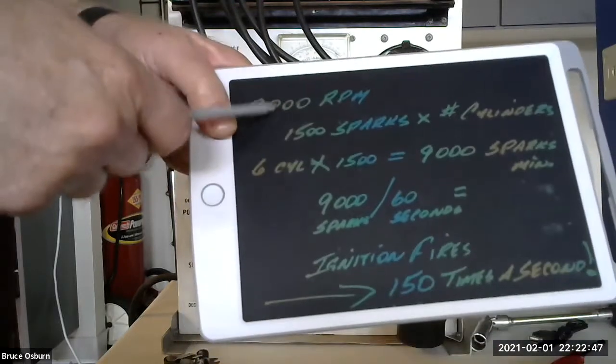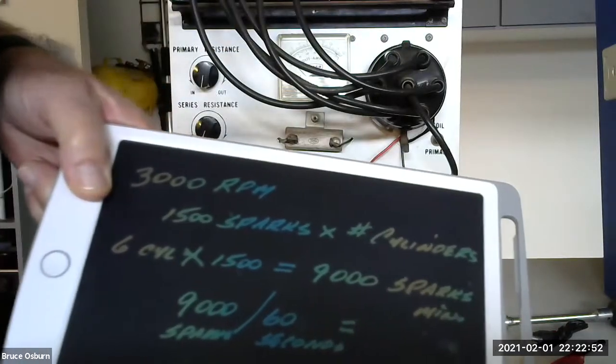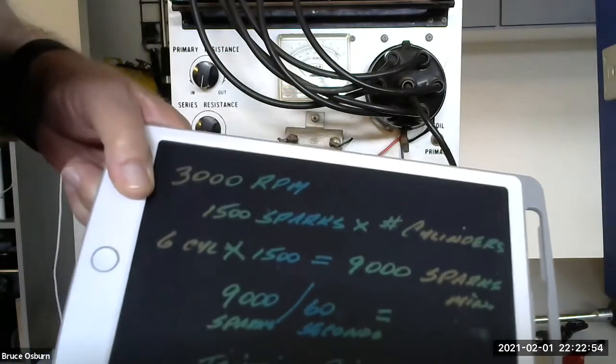If you're going 3,000 RPM, this is spinning 50 times around per second.